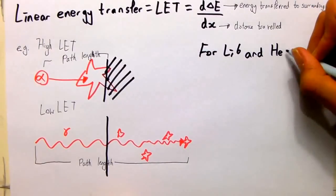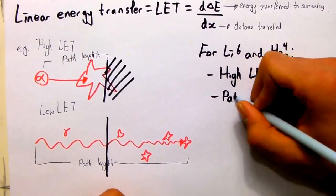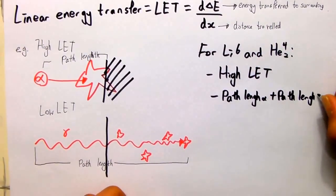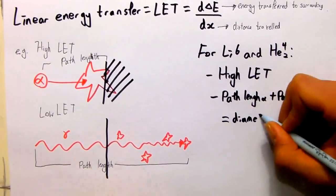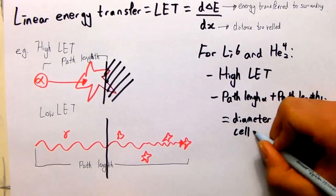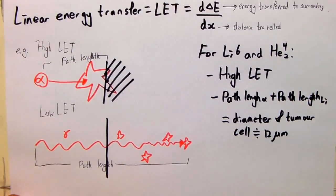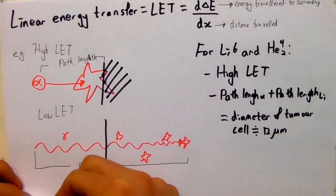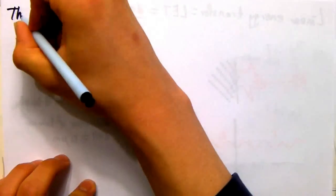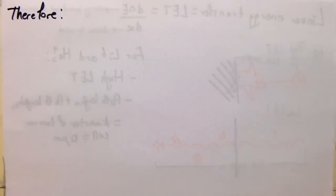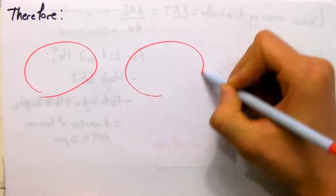The alpha particle and lithium-6 ion have very high linear energy transfer, and their path lengths, how far they are able to travel before stopping, is smaller than the diameter of the tumor cells. This means assuming the boron-10 has been deposited in or next to the tumor cell, it should only attack the cell and will do little damage to normal cells.